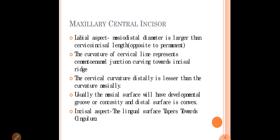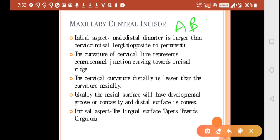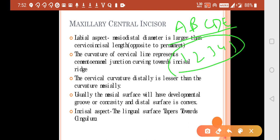You should also know about succedaneous teeth. Succedaneous teeth are those teeth that come in place of your deciduous teeth — in place of A, B, C, D, and E. So permanent teeth 1, 2, 3, 4, and 5 are your succedaneous teeth. Note that tooth 6 is not a succedaneous tooth. Succedaneous teeth are developed from the successional lamina, while permanent teeth 6, 7, and 8 develop from the distal extension of the dental lamina.